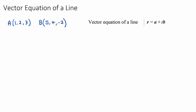In this video, we're going to have a look at the vector equation of a line and how it relates to some common IB Math exam questions. I've given you two coordinates on a three-dimensional plane. Coordinate A is the point (1, 2, 3), and coordinate B is (5, 4, -2).